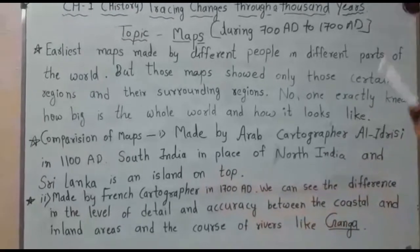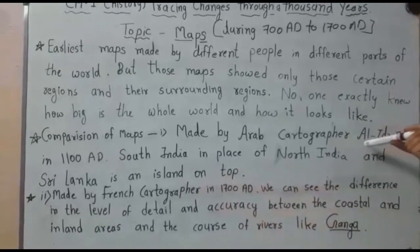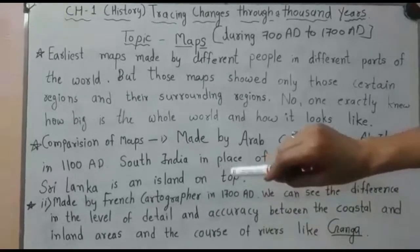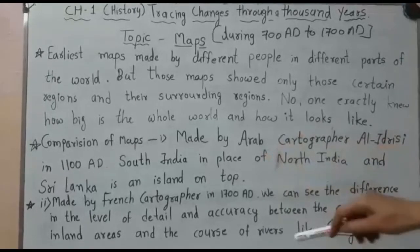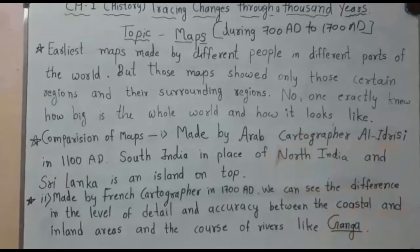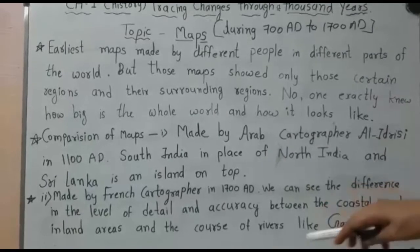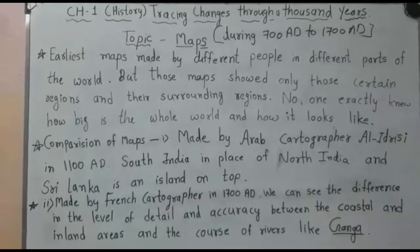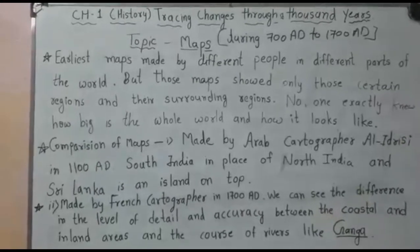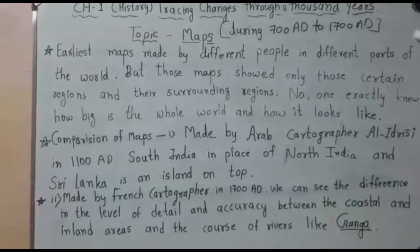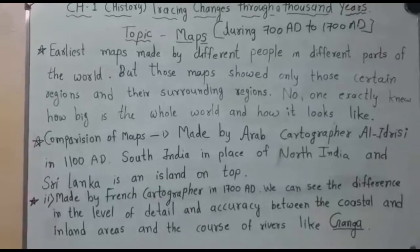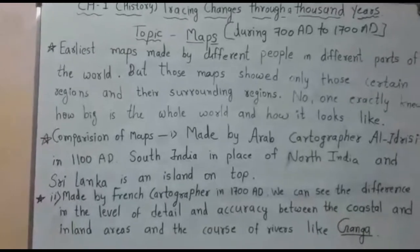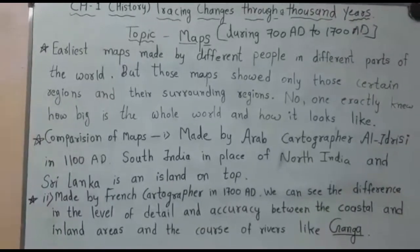When we compare Al Idrissi's Arabic map with the French cartographer's map, we can see differences in the Ganga river plains and inland areas — what different areas are covered by the Ganga river. These are different types of things we observe when comparing these maps, and we will discuss further changes and modifications in this topic later on.